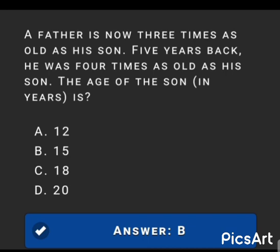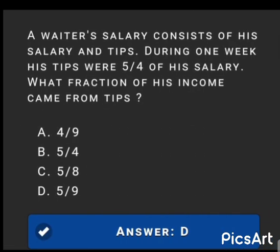Next MCQ: A father is now three times as old as his son. Five years back he was four times as old as his son. What is the age of the son? The answer is option B: 15 years.